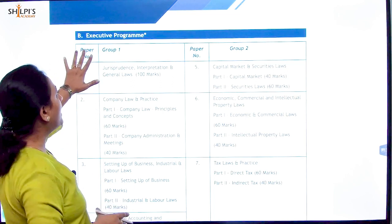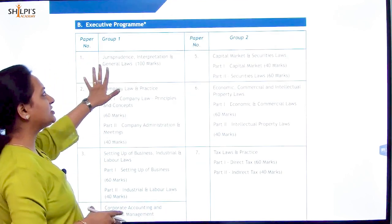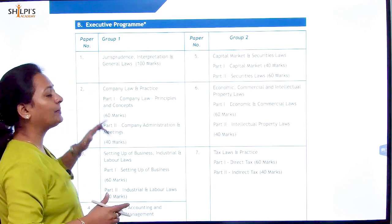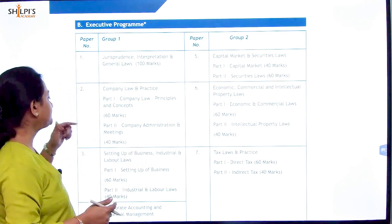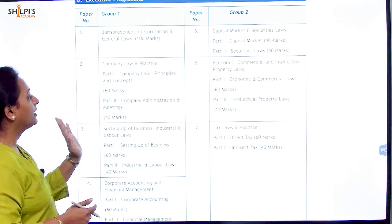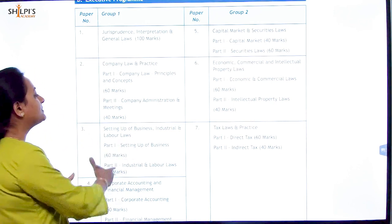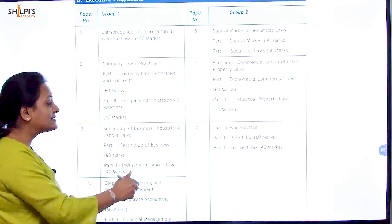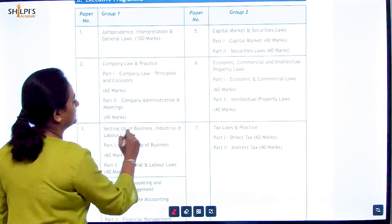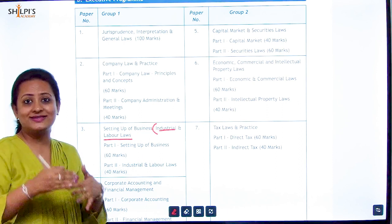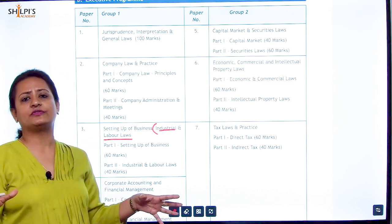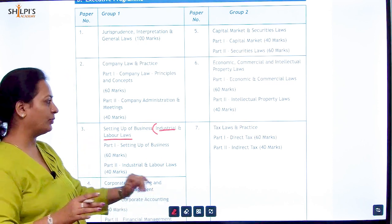Here is the both modules paper breakup. Under Group 1, you will have JIGL — same as in the old syllabus. Company Law Practice — same as in the old syllabus under Module 1. Setting up of Business — the subject name has been changed. It was 'Setting up of Business Entities and Closure'; now the name is 'Setting up of Business, Industrial and Labour Laws' because labour laws and industrial laws have been introduced in this new syllabus. The closure of business entities content has been totally removed.